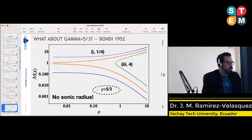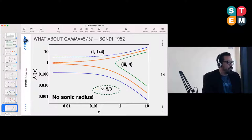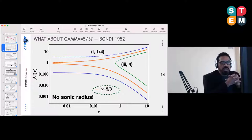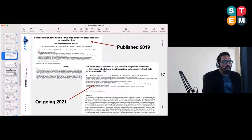This is why we have included this pseudo-relativistic potential, because in that case we were able to actually find a sonic radius different from the Newtonian case where no sonic radius is possible with this gamma.